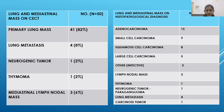On histopathological diagnosis, 15 cases turned out to be adenocarcinoma among the 41 primary lung masses; 9 were small cell carcinoma; 8 were squamous cell carcinoma; and 5 turned out to be large cell carcinoma. Three were diagnosed as other infective etiology, 3 were lymph nodal masses, 1 was thymoma, 1 was a neurogenic tumor (paraganglioma), 4 were lung metastasis, and 1 was a carcinoid tumor.